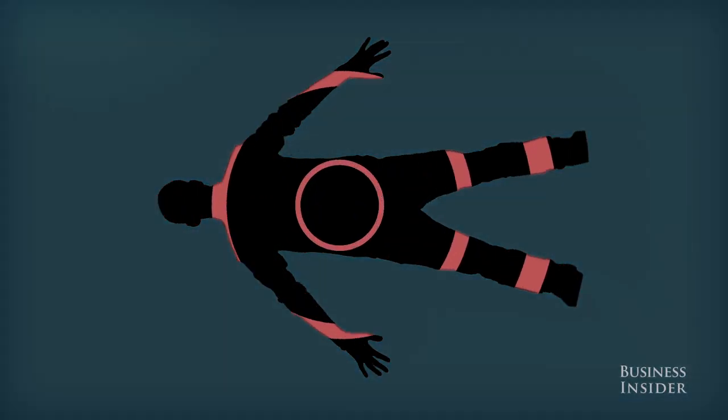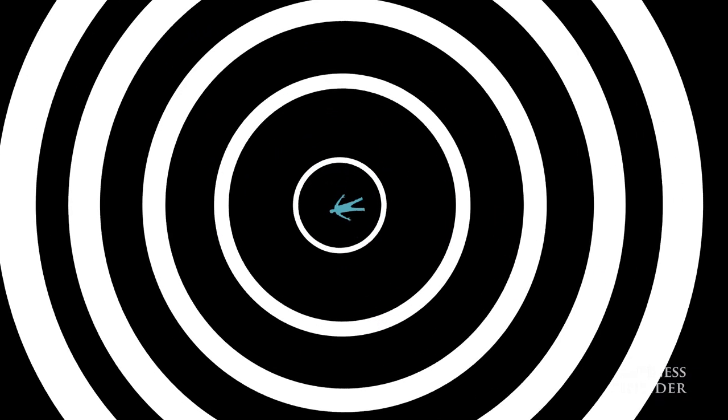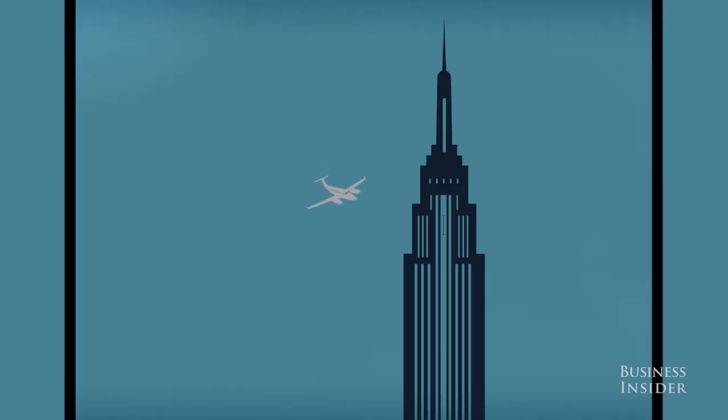But before you run off and start practicing elevator drills, you should know there has only been one recorded incident of a free falling elevator as a result of a snapped cable. It happened back in 1945 when a B-25 bomber crashed into the Empire State Building.